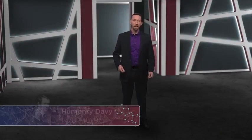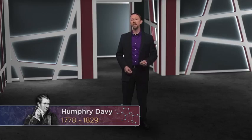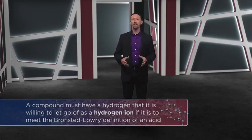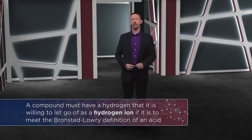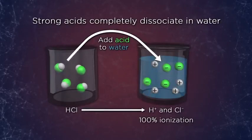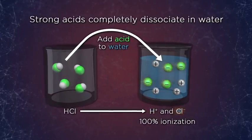It stands to reason that the first stop on our discussion of how easily acids dissociate is to consider just how stable an acid molecule is. Humphrey Davy got us started by correctly identifying hydrogen as the critical element for acidity. A compound must have a hydrogen that it's willing to let go of as a hydrogen ion if it's to meet the Bronsted-Lowry definition of an acid. So what does it mean to release a hydrogen ion from a molecule? It means that the electrons from the bond to the hydrogen need to be taken on completely by the other bonded atom. This results in a full positive charge on the hydrogen, a full negative charge increase on the conjugate base, and the separation of the two into solution.